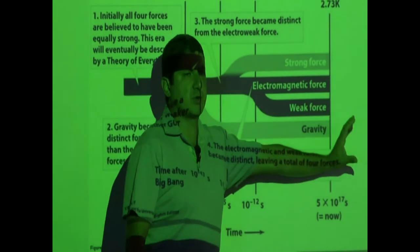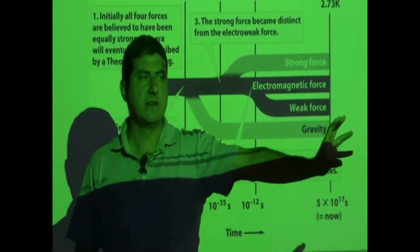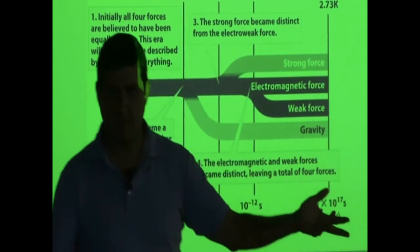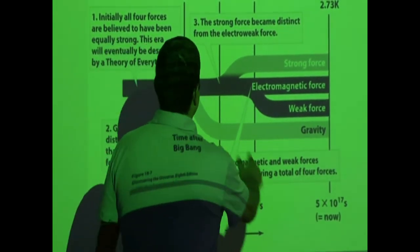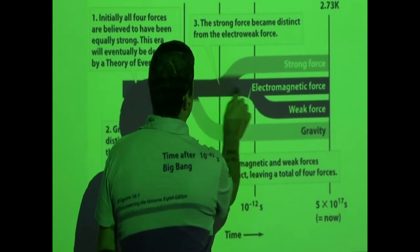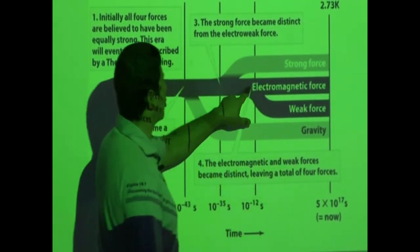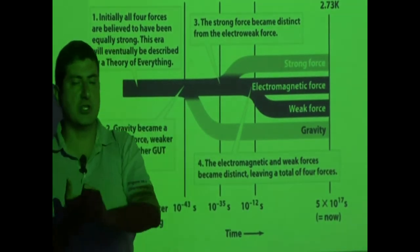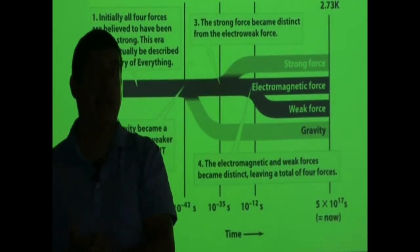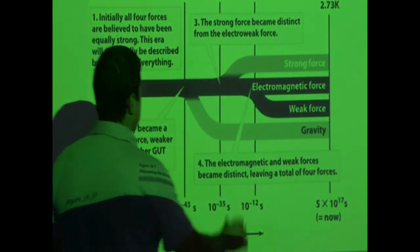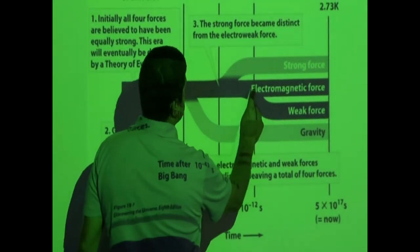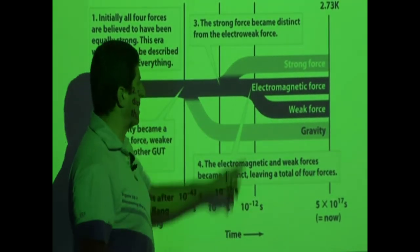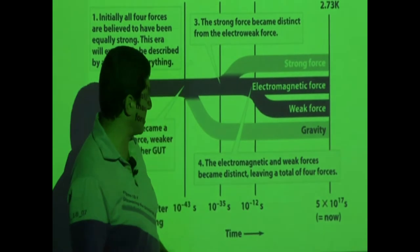It's almost as if the universe right away was designed for intelligent life form, to make life. Then what's left is the electroweak force — electroweak force is the combination of the electromagnetic force and the weak nuclear force. Then at 10 to the 15 Kelvin, the weak force separates out at 10 to the minus 12 seconds.